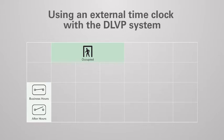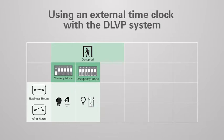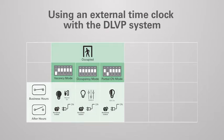When a space is first occupied, the behavior of the system is the same for both during business hours and after hours modes. If the power module is configured for vacancy mode, the occupant must use a wall station to manually turn lighting on. If configured for occupancy mode, lighting will turn on automatically to user programmable scene number six. If configured for partial on mode, lighting will turn on automatically to a 50% light level. In all configured modes, controlled receptacles will turn on.